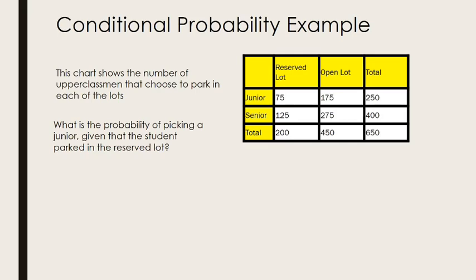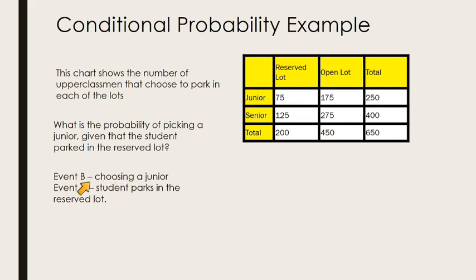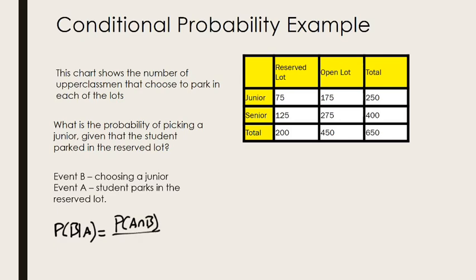What is event A and what is event B? Let's define event B as choosing a junior, because that event is happening dependent on — given that — the student parks in the reserved lot. That's event A. Based on that, let's use our formula: the probability of B given A is equal to the probability of A and B over the probability of A.